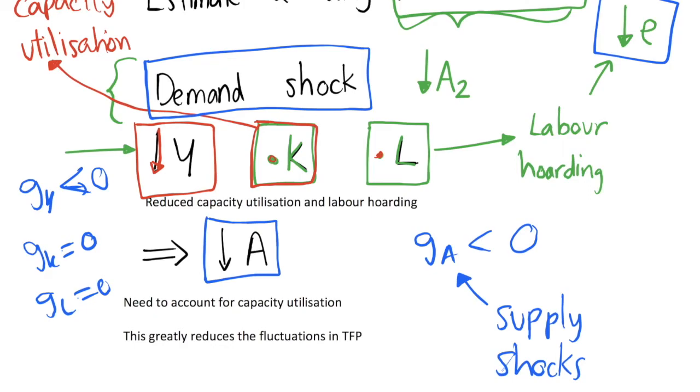So we don't really consider the possibility of a demand shock because we just have people constantly saving the same proportion of income. So how do we correct this issue with the Solow model? Well, we have to account for this capacity utilization in the model, and this is not beyond the realms of possibility to do and it has been done in a number of papers where we say, okay, our capital stock and our labor stock is constant but we can start to estimate how much they're actually being utilized and this can adjust our Solow residual.